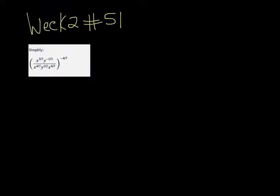We want to simplify the expression. And we have a negative 4/7 on the outside exponent. So you can either try to simplify the inside first and then distribute, or distribute and simplify. I think with these it's better to distribute then simplify.